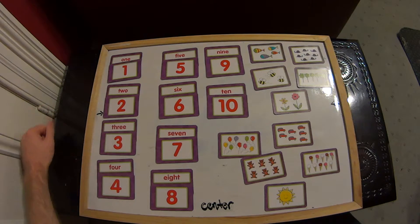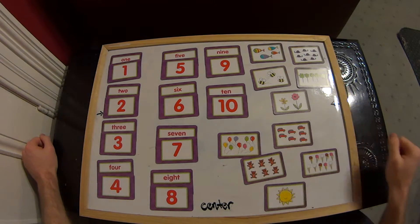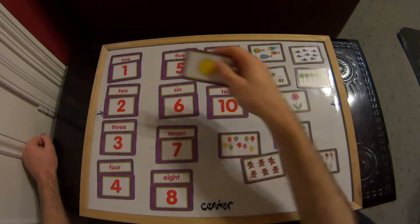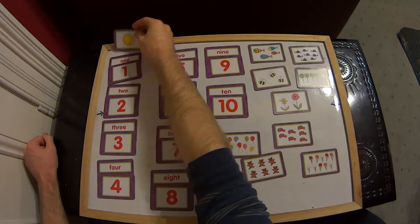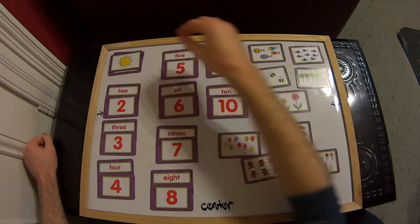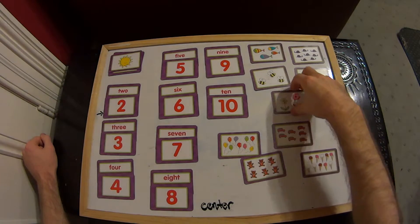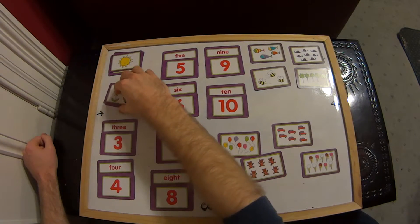So let's start with our 1. Which one of these objects shows just one object? Well, I think that's got to be our sun here. We've got 1 sun, so we can stick that up on top there. Now, we're looking for 2 of something. Well, 2 flowers. Let's put that there.